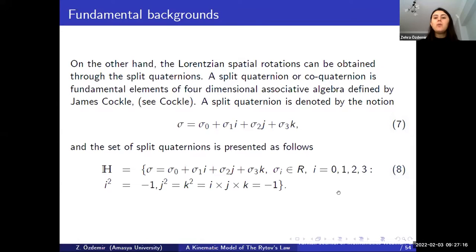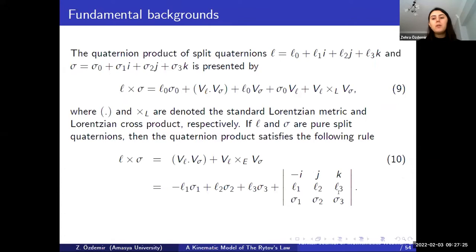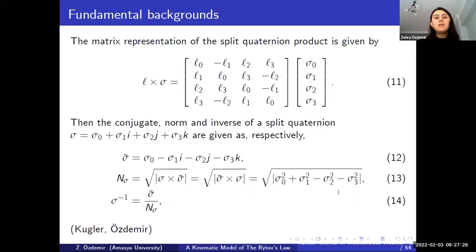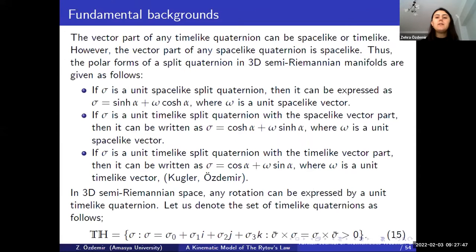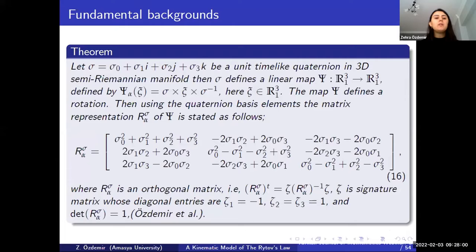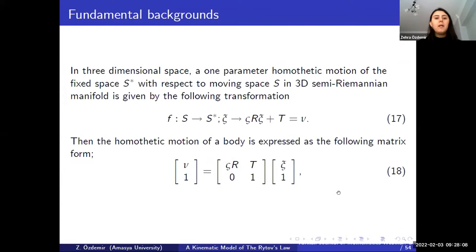The split quaternion is given by equation 7, the set of split quaternions by equation 8, and the split quaternion product by equations 9 and 10. The metric form of the split quaternion product is given by equation 11. The conjugate, norm, and inverse of a split quaternion are given by equations 12, 13, and 14. Since vectors in semi-Riemannian manifolds have a causal character, the polar form of a unit split quaternion is defined by three cases, and the rotation matrix associated with a unit split quaternion is given by equation 16. The homothetic motion is given by equation 17 and its matrix representation by equation 18.